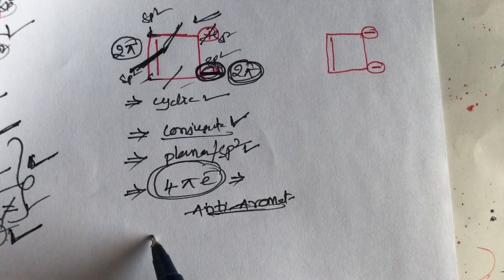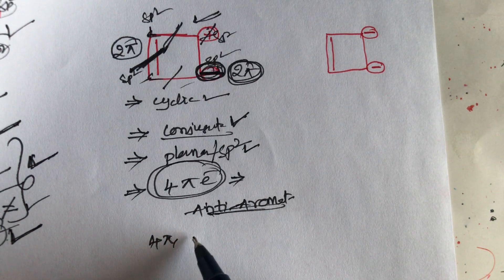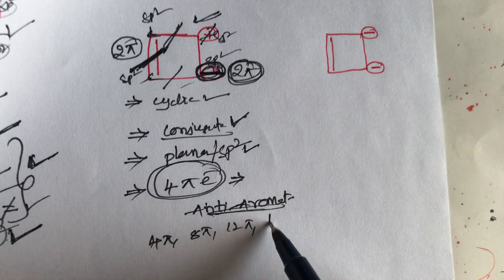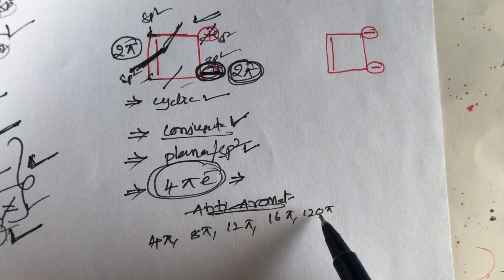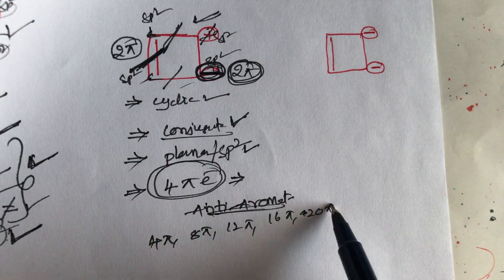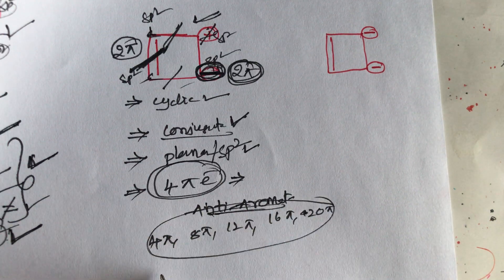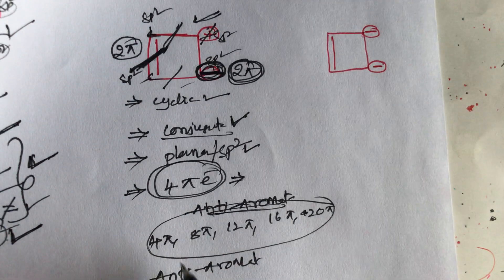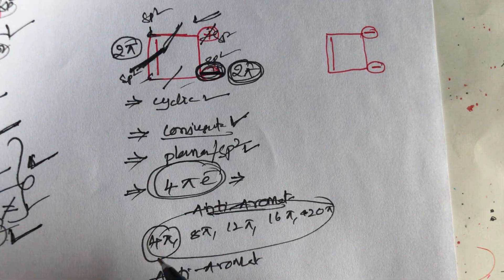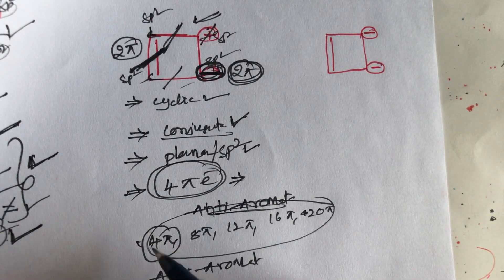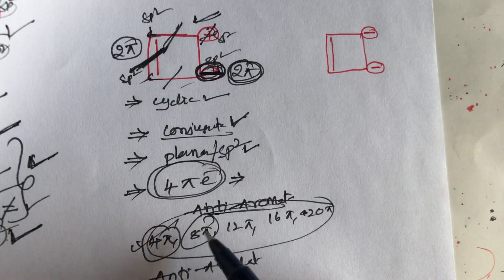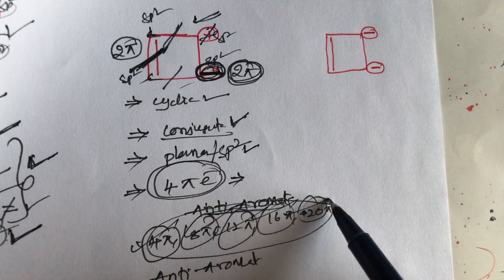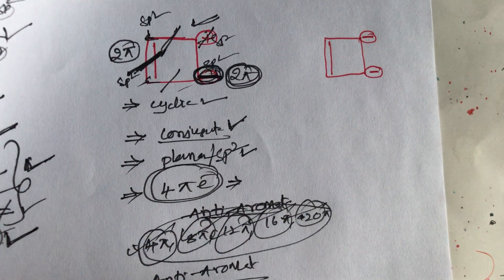What are the anti-aromatic electron counts? That is: 4, 8, 12, 16, or 20 pi electrons — these all belong to anti-aromatic. So here, 4 pi electrons means anti-aromatic. This is the simple trick.